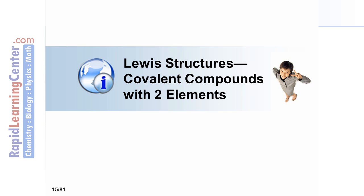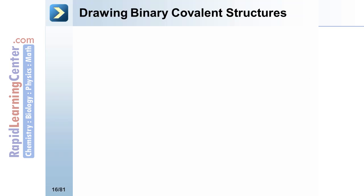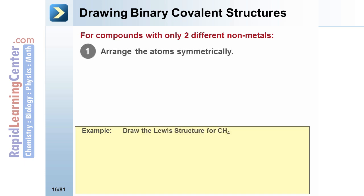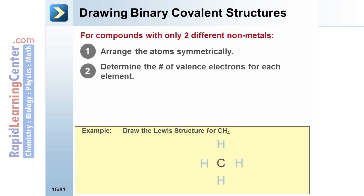How do you draw Lewis structures for molecules? For compounds with only two elements, arrange them symmetrically. Put the C in the middle and the four H's around it. Determine the number of valence electrons for each atom. Carbon is in the fourth group and has four electrons.